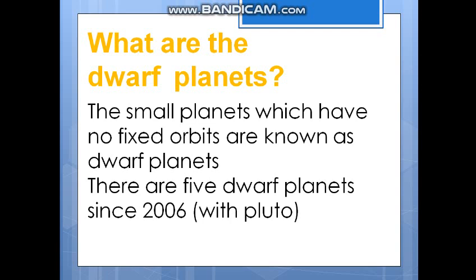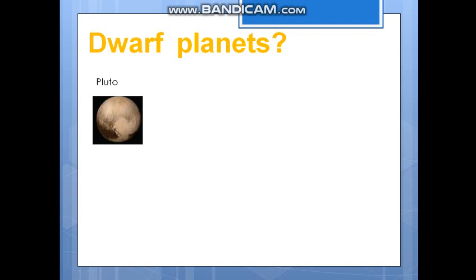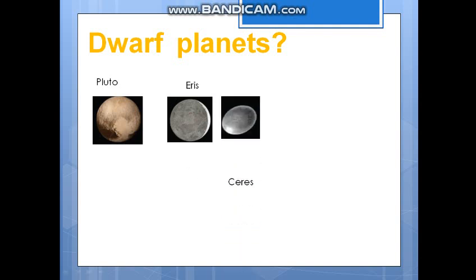Now you can have a comparison between the inner planets and outer planets. We will also discuss about the dwarf planets. Dwarf planets are small planets which have no fixed orbits. There are 5 dwarf planets. Pluto was considered a planet and is now considered a dwarf planet. The five dwarf planets are: Pluto, Eris, Ceres, Makemake, and Haumea.